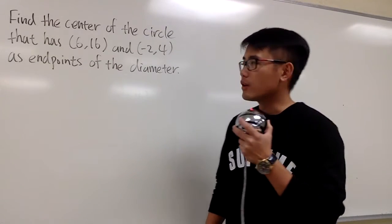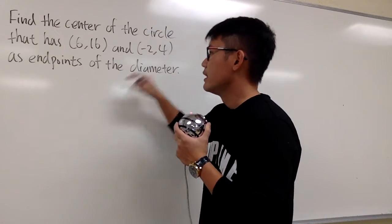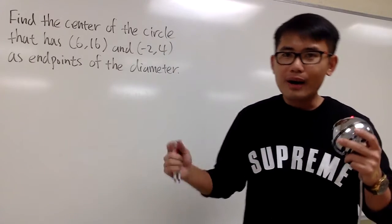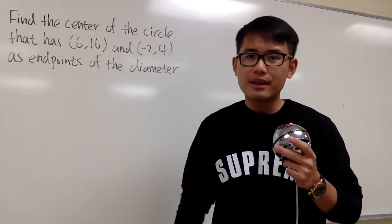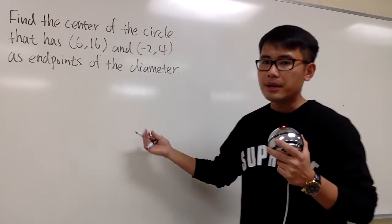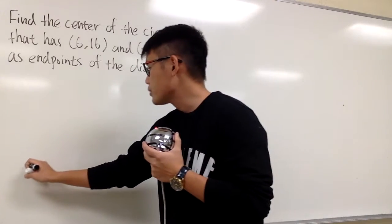For this question, we are going to find the center of the circle that has these two points as the endpoint of its diameter. Well, first of all, how does the diameter of a circle look like? It goes a little across, right? And just to illustrate the idea better, let me draw you guys a picture first.